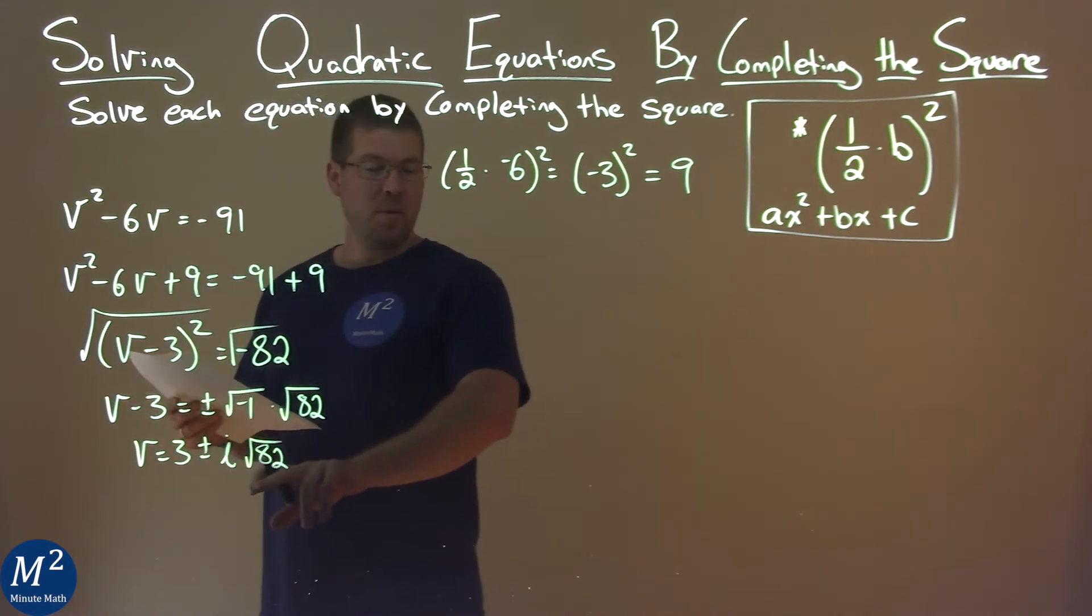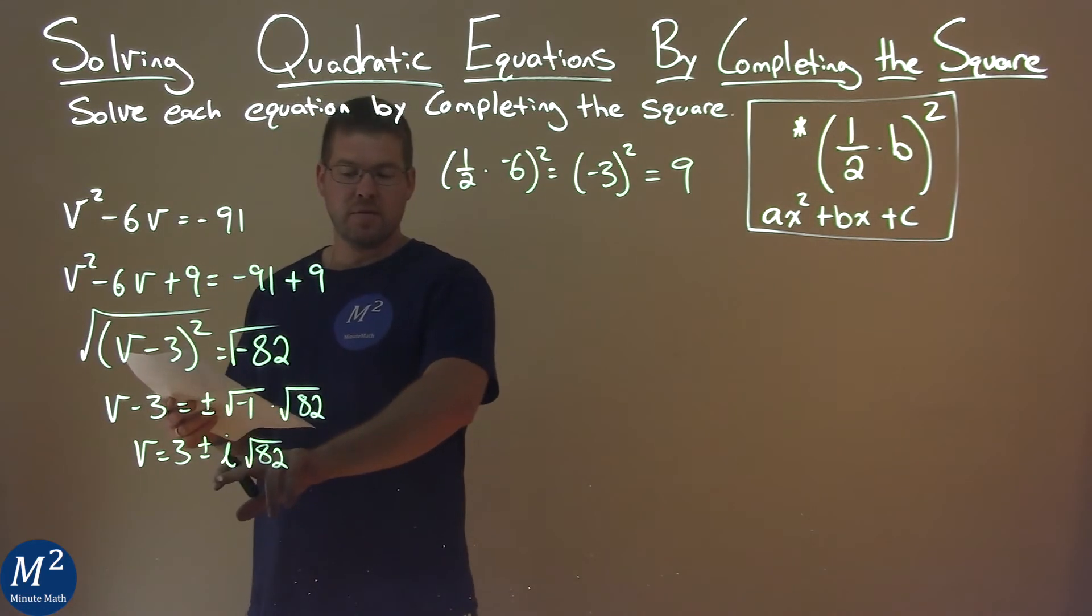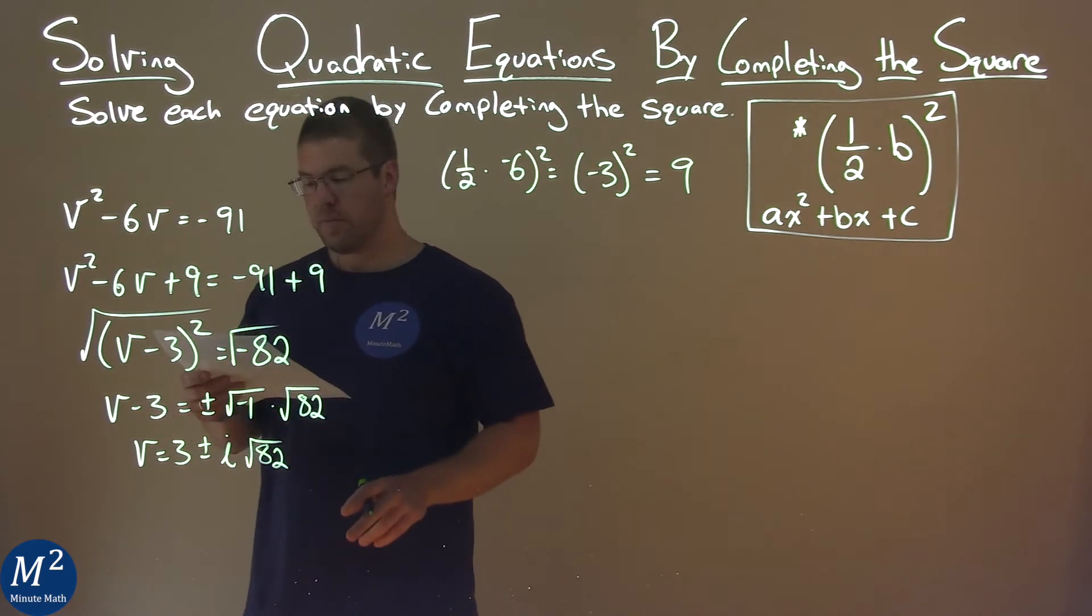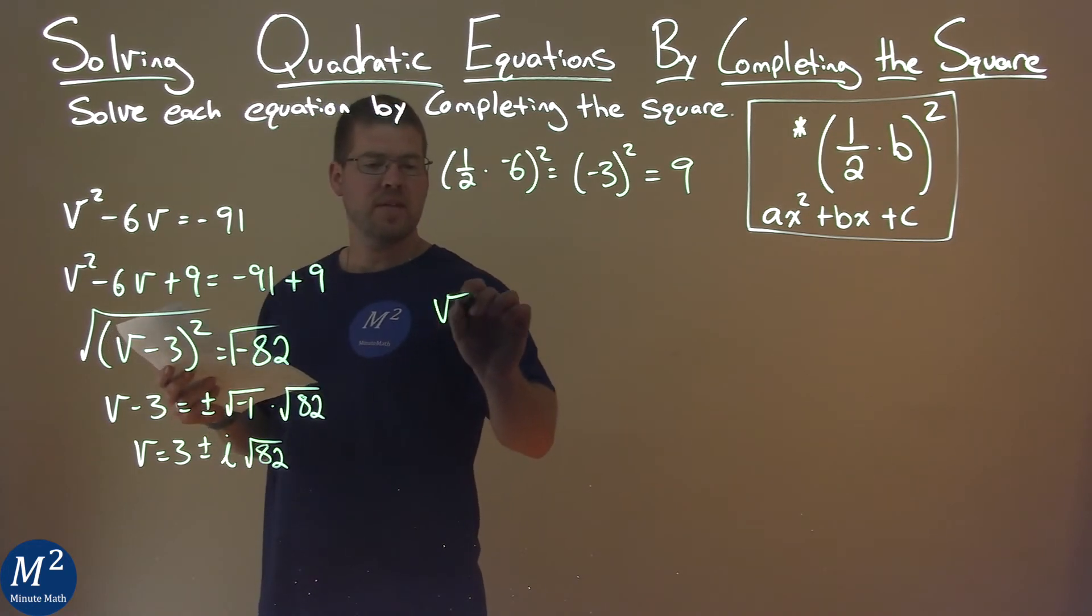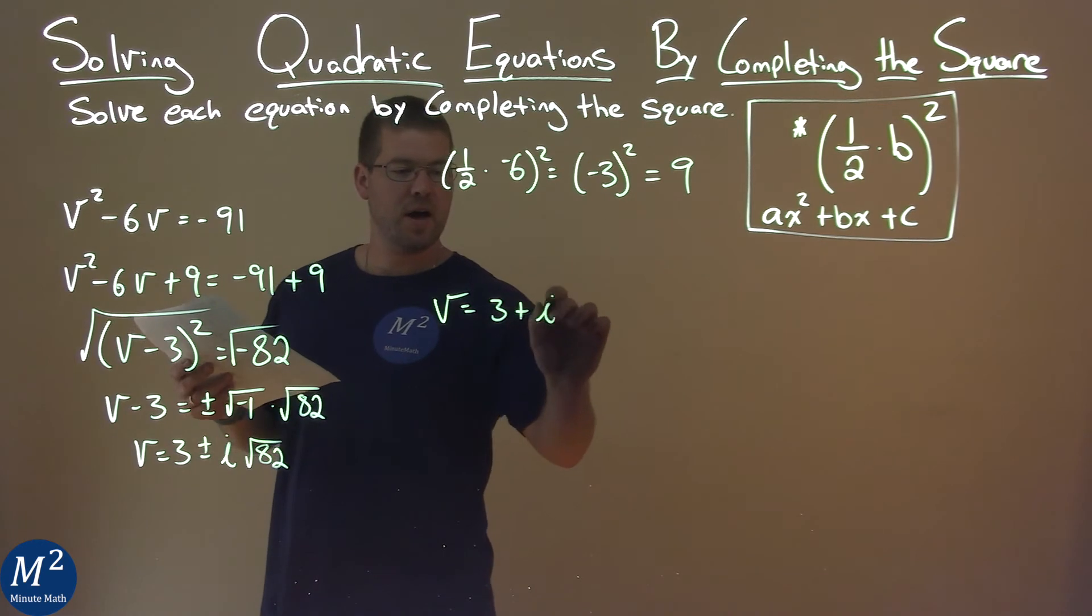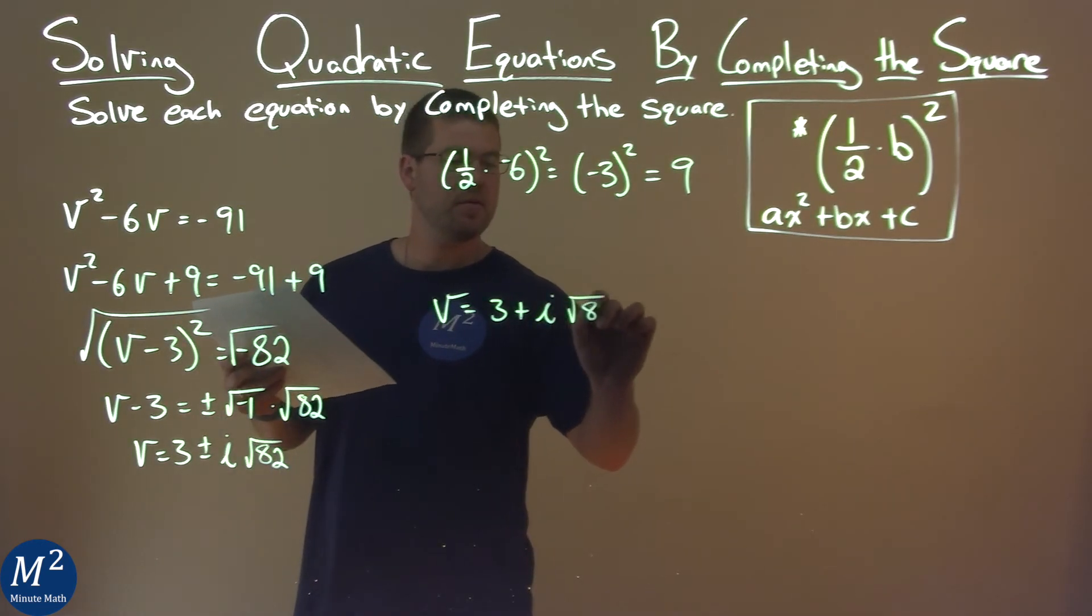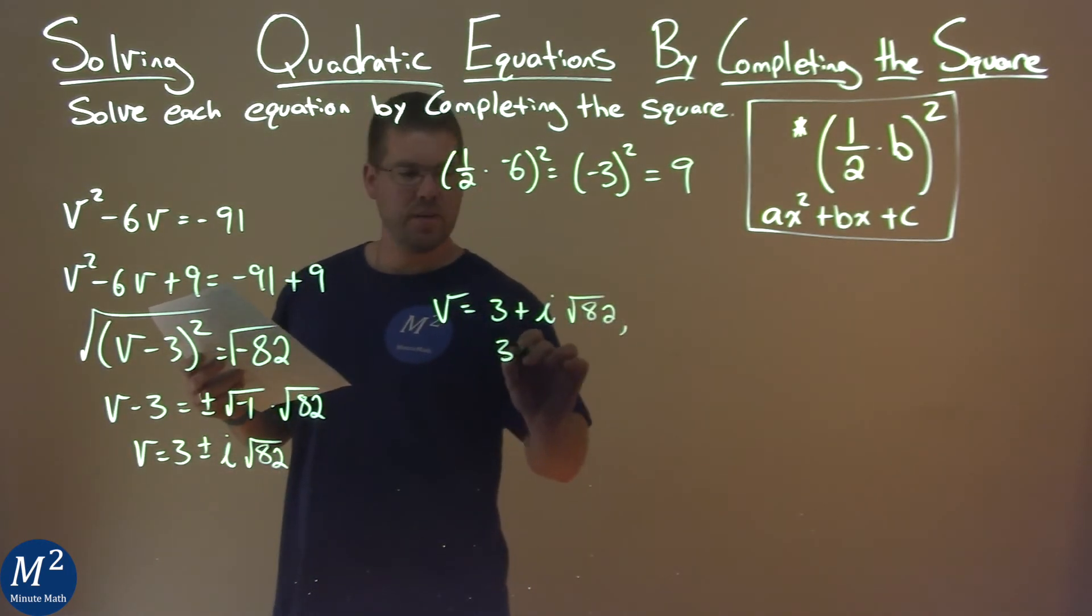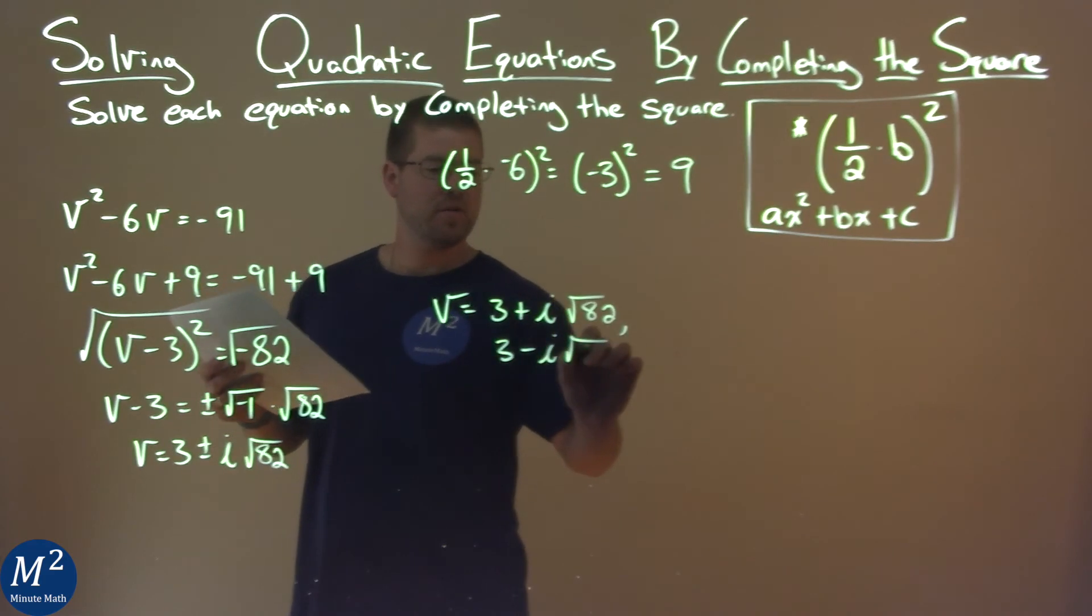And that's pretty much it. We can separate it now. We have plus or minus and the square root of 82 doesn't simplify anymore. And so we can say that v equals, let's deal with the plus part, 3 plus i square root of 82 and 3 minus i times the square root of 82.